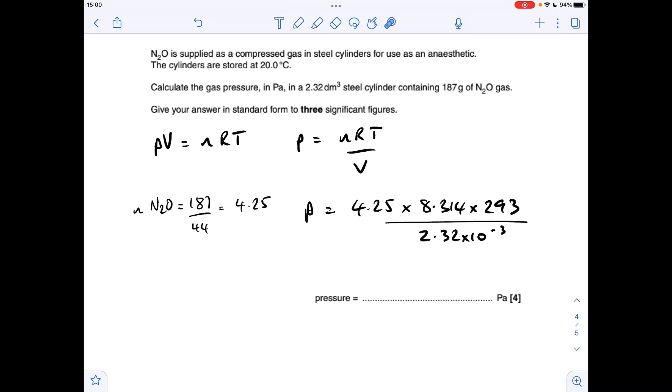The volume has to be in meters cubed, but they've given it in decimeters cubed. So I just put a times 10 to the minus 3 after my dm cube number, and that puts it in meters cubed. So there's the calculator value.